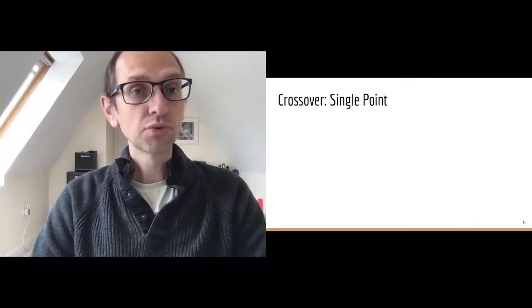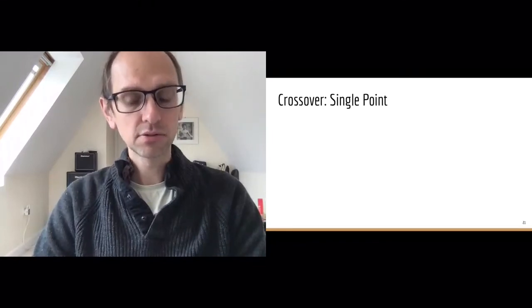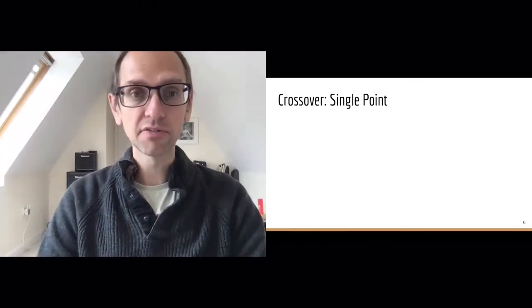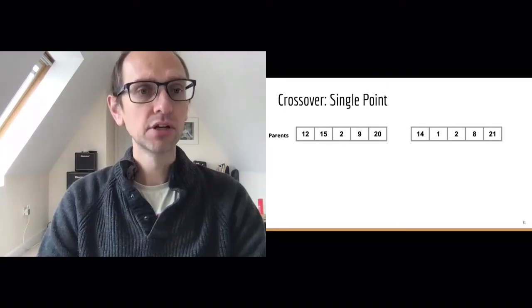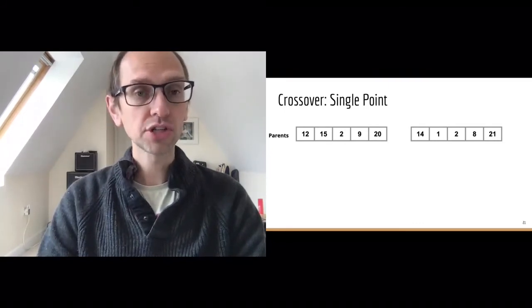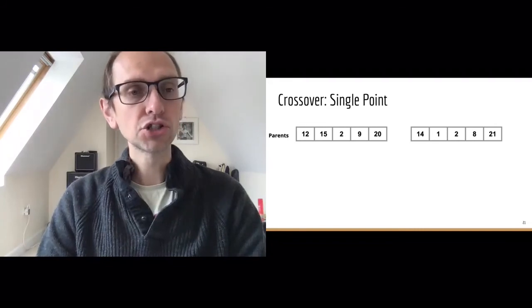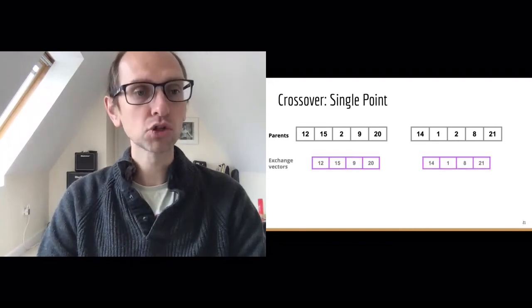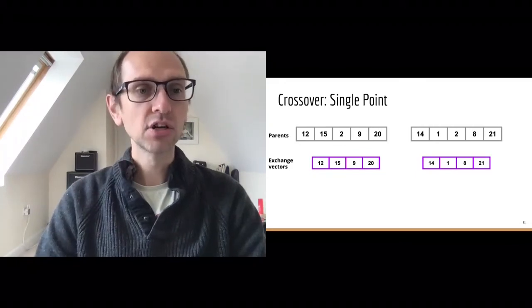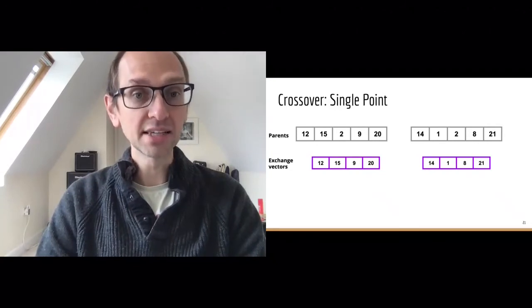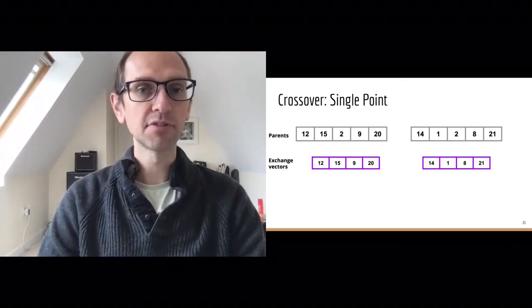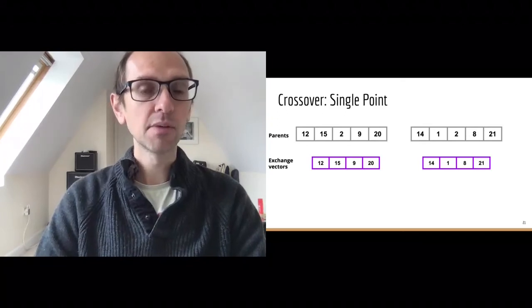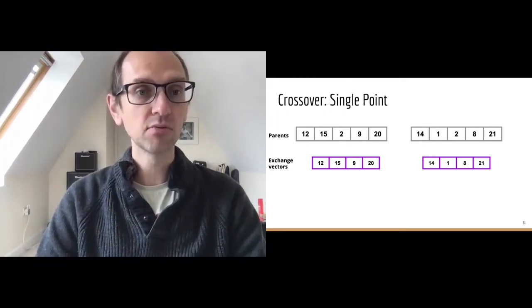Now turning to crossover or recombination — there are many ways to do this. The approach I'll show today is called single point crossover, which works quite well for facility location problems. We have two parents that have been through tournament selection, and we recombine them to create a new solution based on their encodings. The first step is to create exchange vectors — elements of those arrays which are unique. For example, facility 12 is in parent one but not in parent two; the same for 15. But facility 2 is in both solutions and is excluded from the crossover.